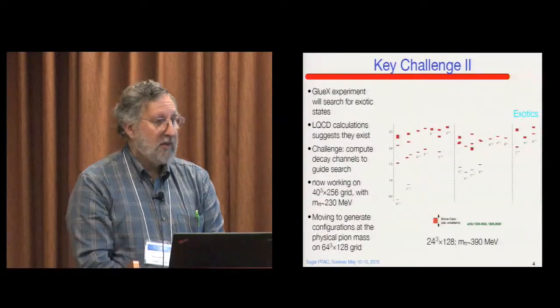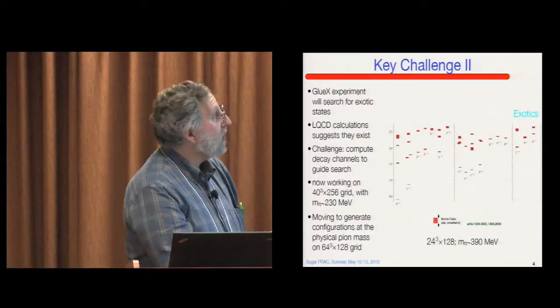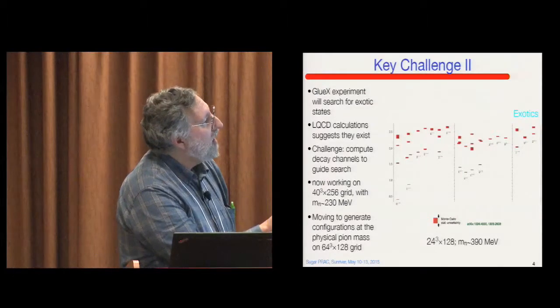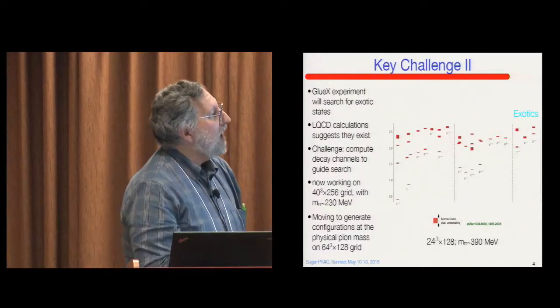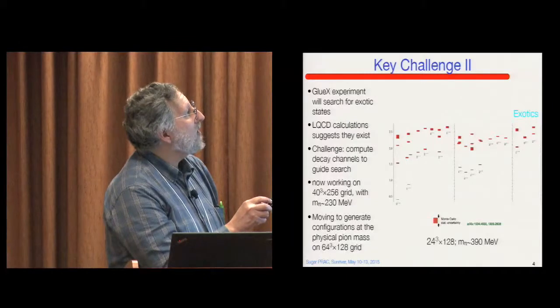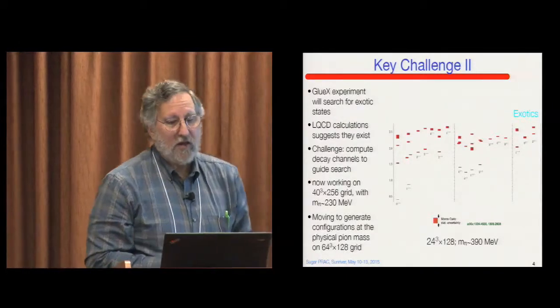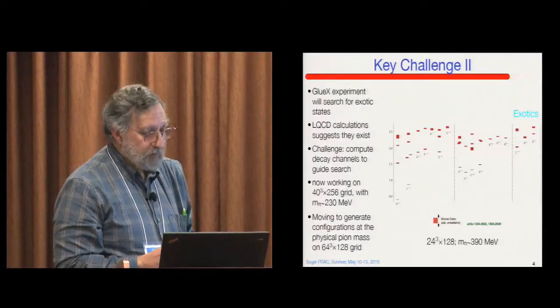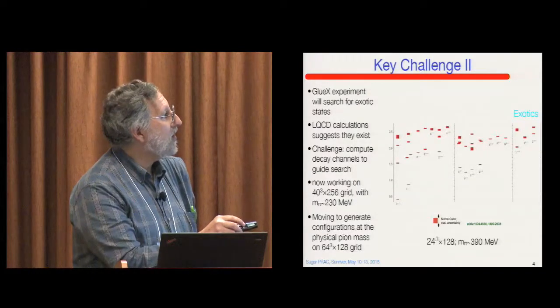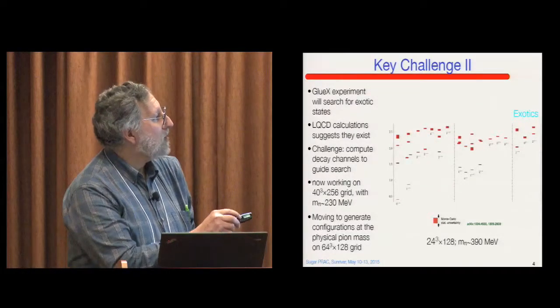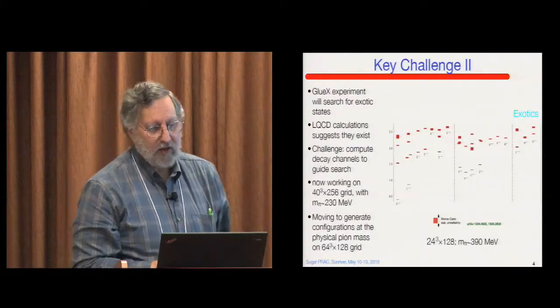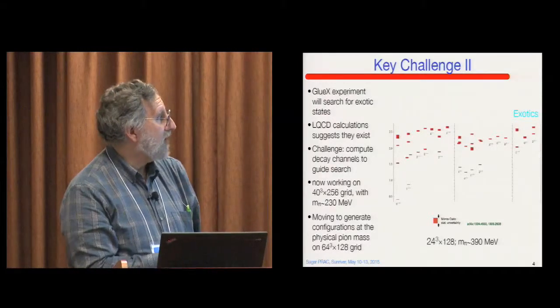So this is a picture of some of the states that have been studied in the theory. So there are a bunch of different states with different quantum numbers. And way over here are the exotics. The exotics include these extra gluonic excitations. And there's an experiment at JLab that I'll mention again later. And that experiment is designed to look for exotics.